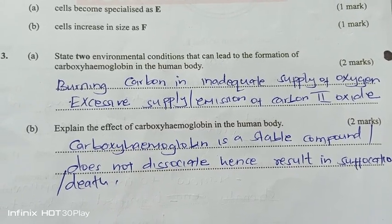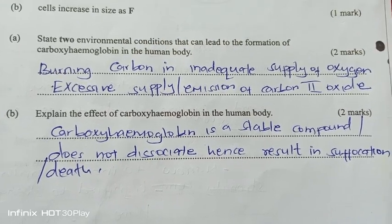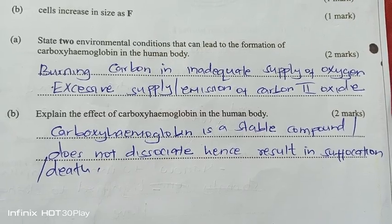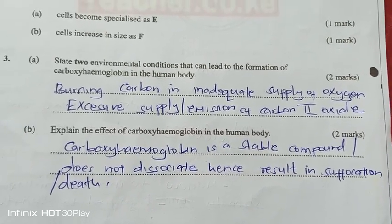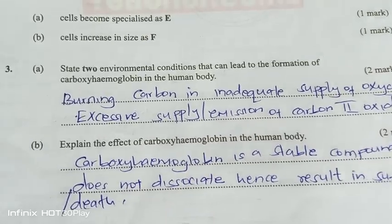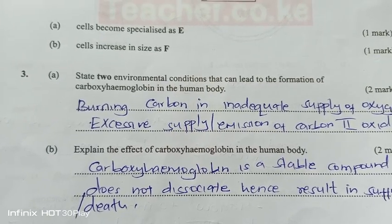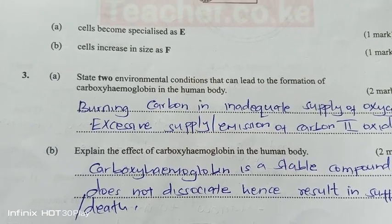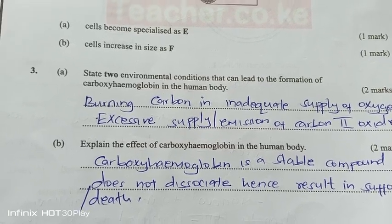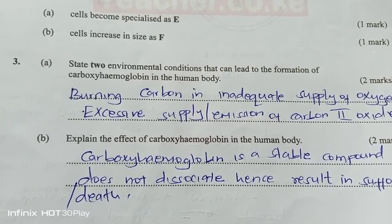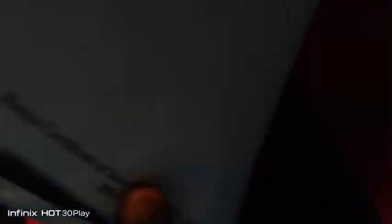Explain the effect of carboxyhaemoglobin in the human body. Carboxyhaemoglobin is a stable compound and it does not dissociate, therefore it leads to suffocation or death. It occupies the haemoglobin and does not let it go to collect more oxygen, and that is why you suffocate and die.